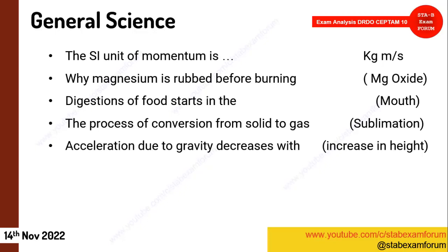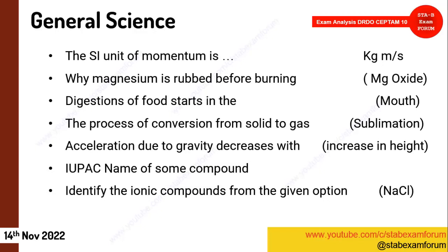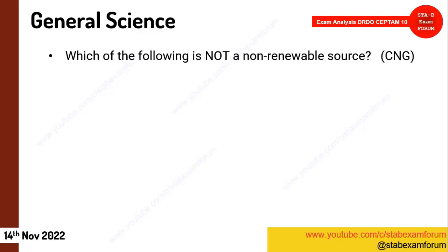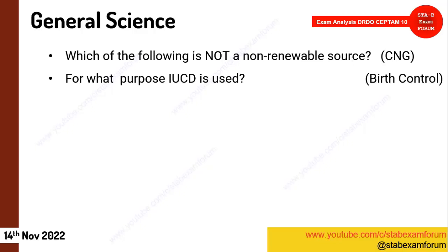One question on the variation of gravity — how gravity decreases with increase in height. Some IUPAC names of compounds were asked but students were not able to recall. Some ionic compounds were given with options to identify. One question: which of the following is not a non-renewable resource? The student attempted CNG (compressed natural gas). One biology question: what is the purpose of IUCD? The answer is birth control.